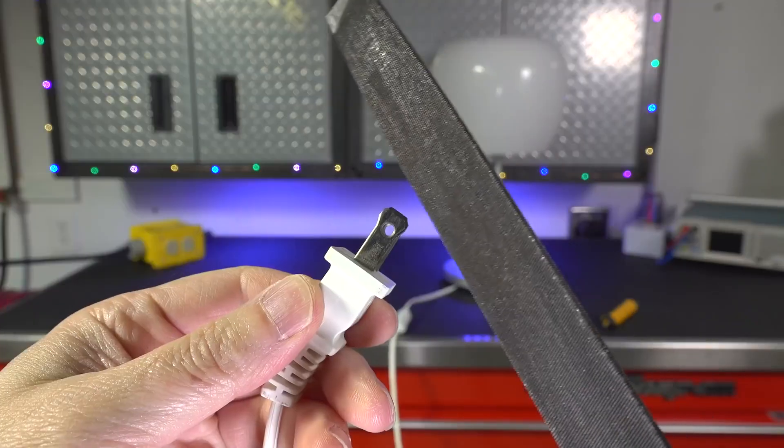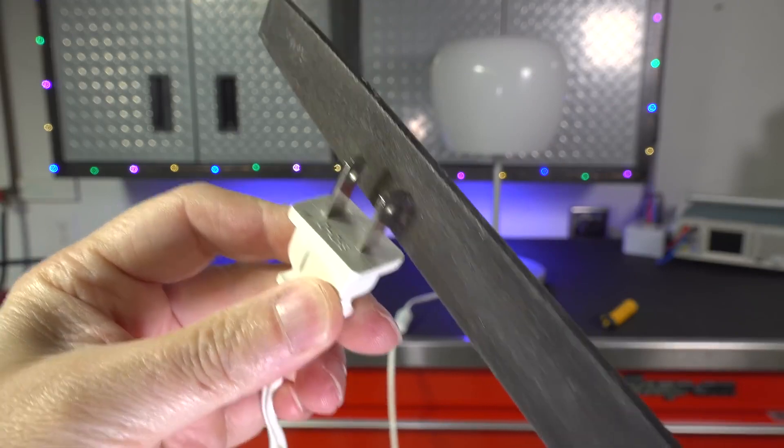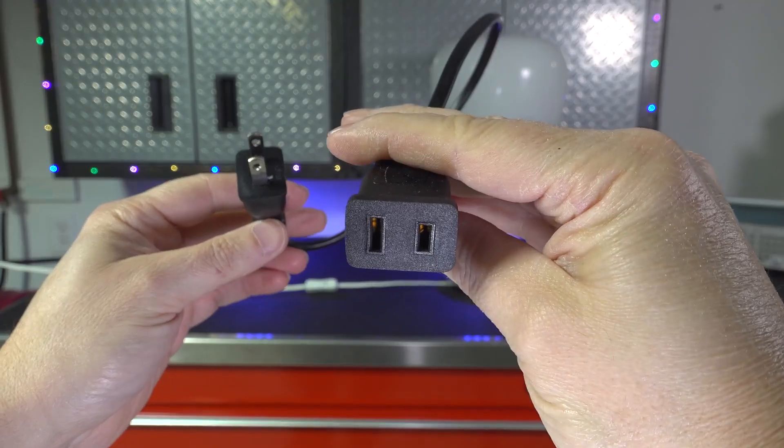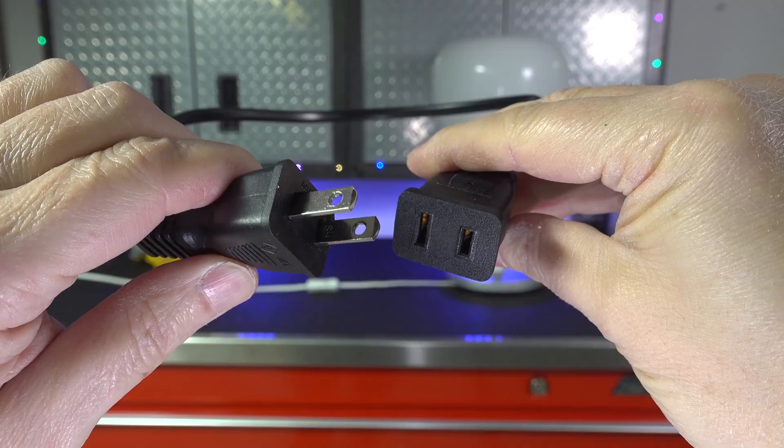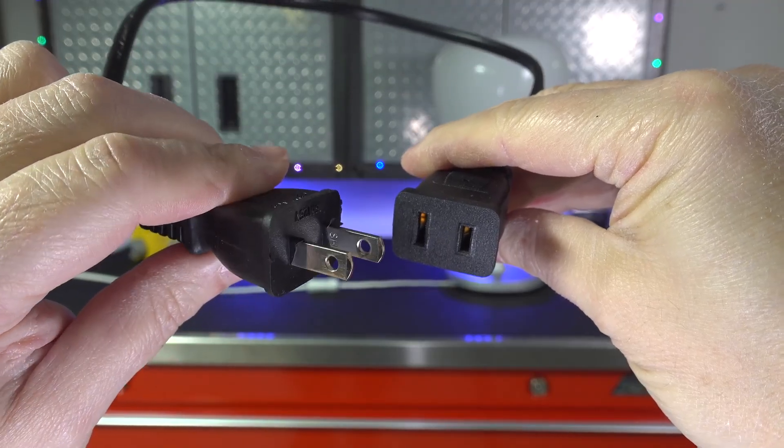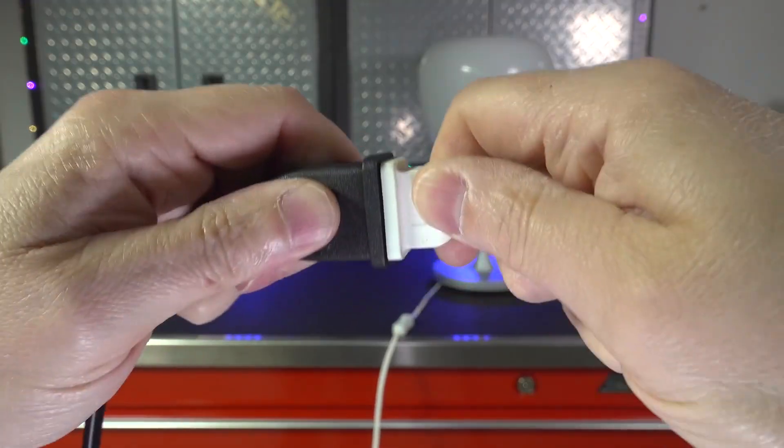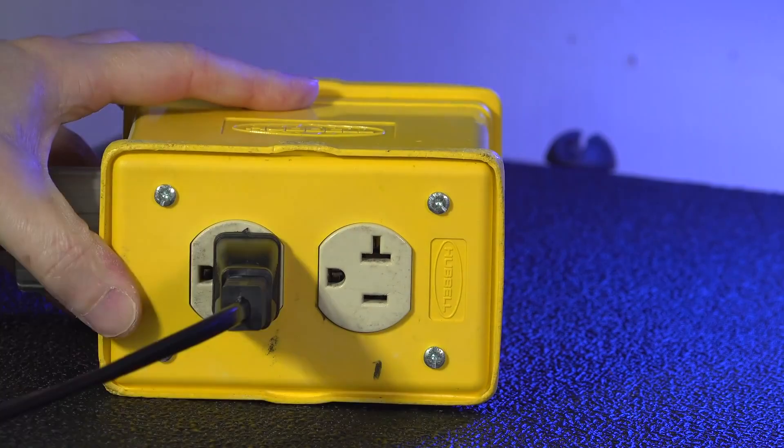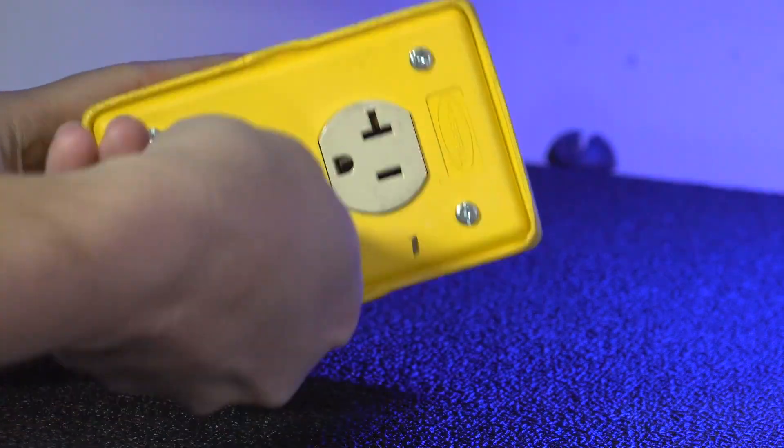But what if I took that polarized plug and I filed off those little prongs so that they were both the same? Well actually I don't have to because I have this very illegal adapter that will take a polarized plug and turn it into a non-polarized plug. And now I can plug it in either way. So for the test, I'm going to plug it in backwards so that the neutral and the hot are actually reversed.